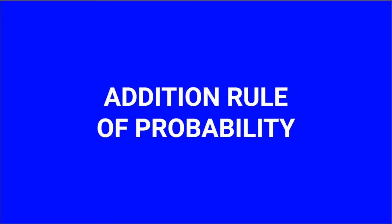The addition rule of probability is used for probability of combined events where the joining word is 'or'. First, let's look at non-mutually exclusive events.